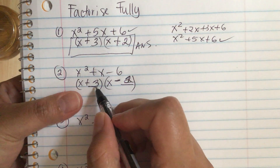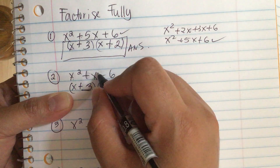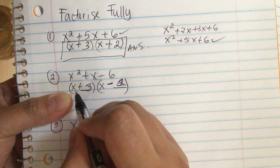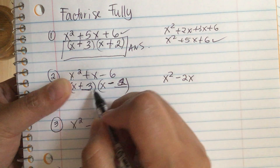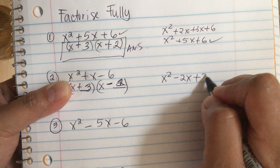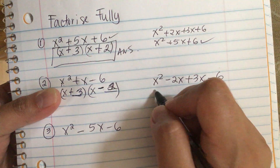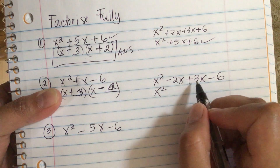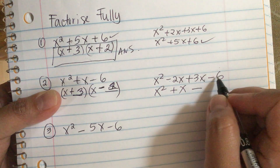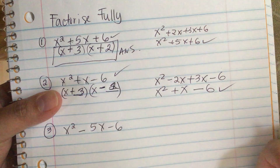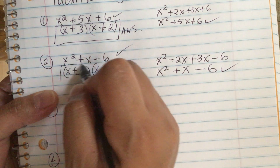Let's check by multiplying. x times x is x squared, x times negative 2 is minus 2x, 3 times x is 3x, and 3 times negative 2 is minus 6. So x squared, minus 2x plus 3x is plus x, minus 6 — we factored it correctly because we get the original polynomial.